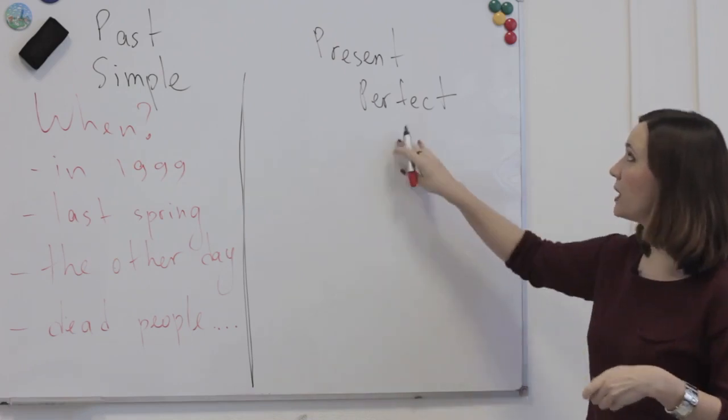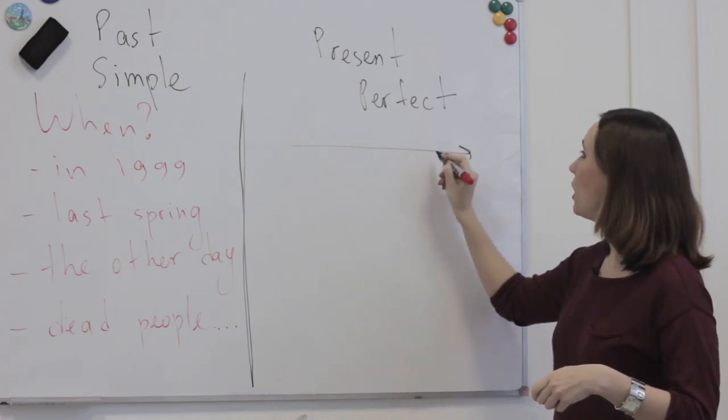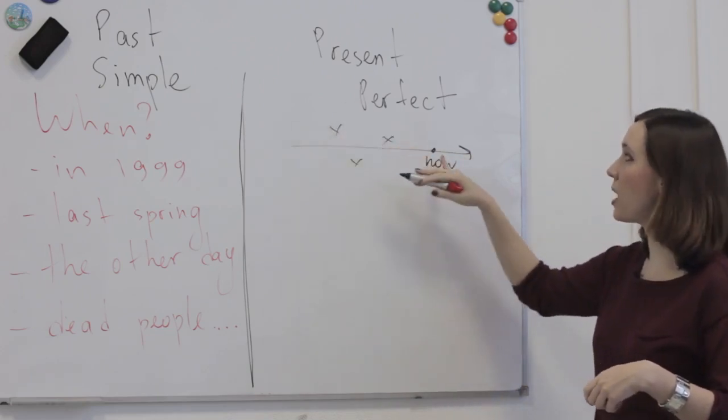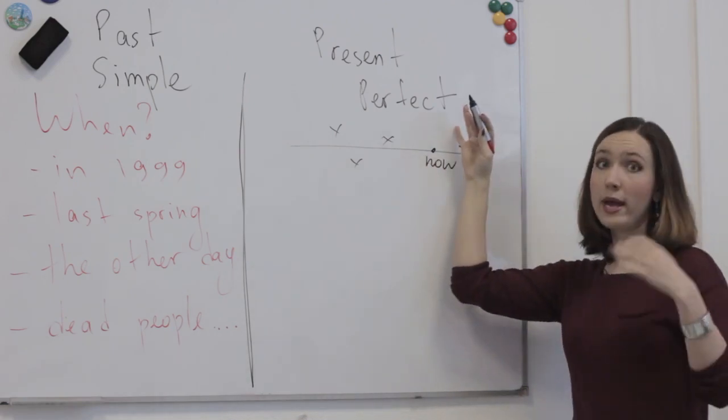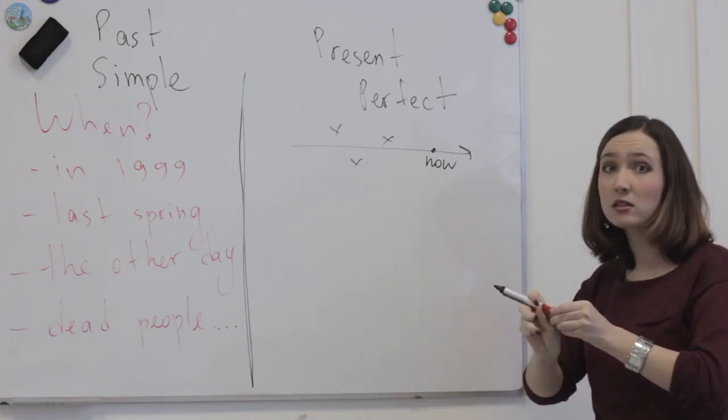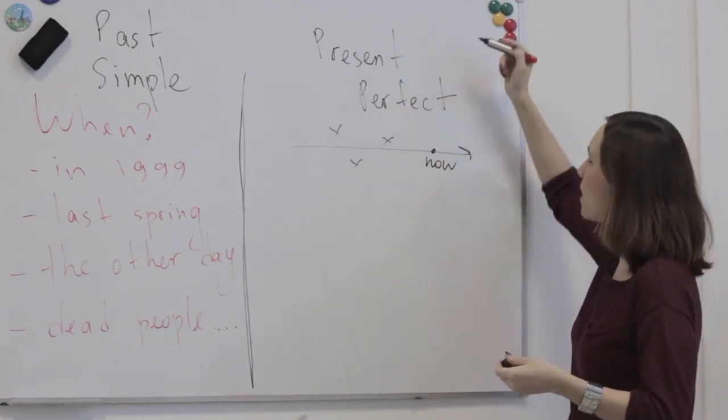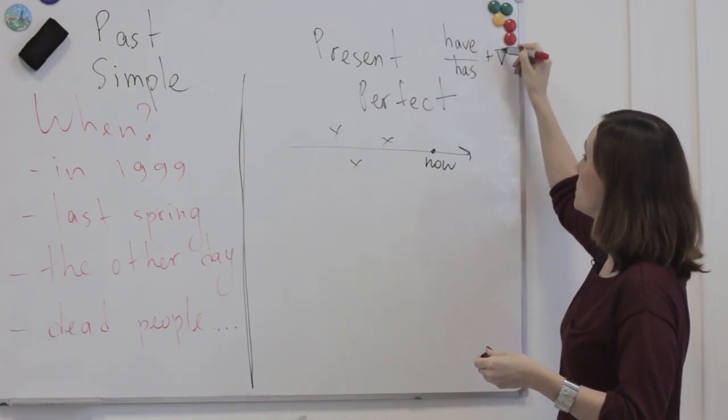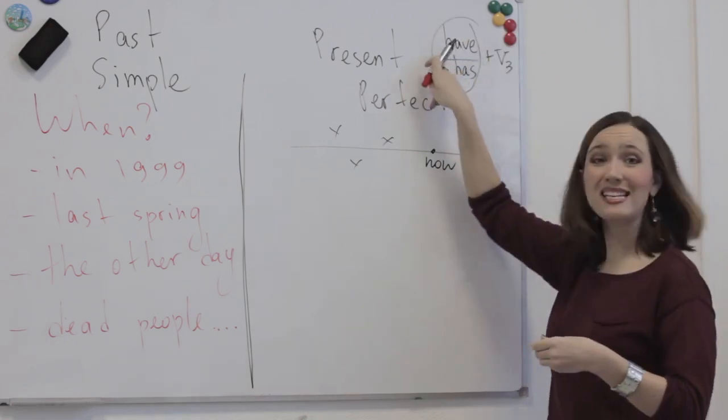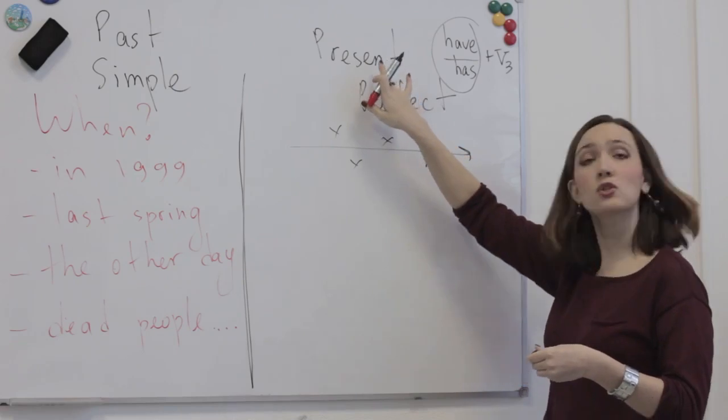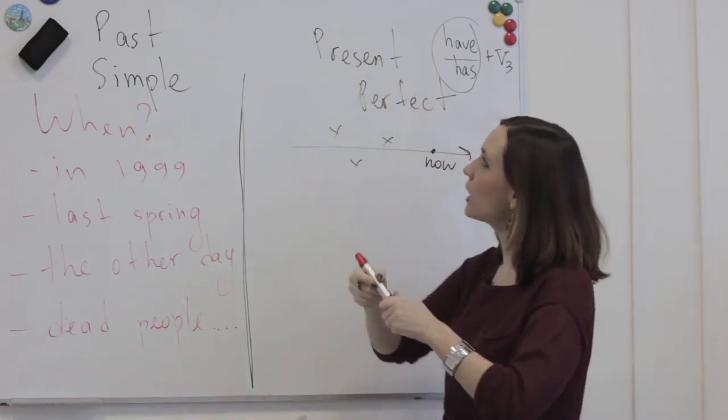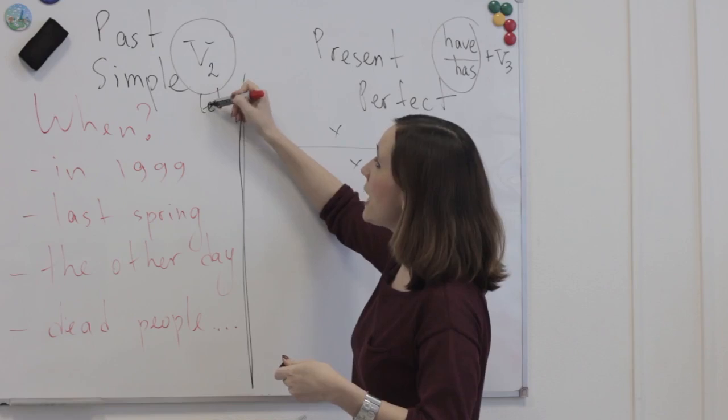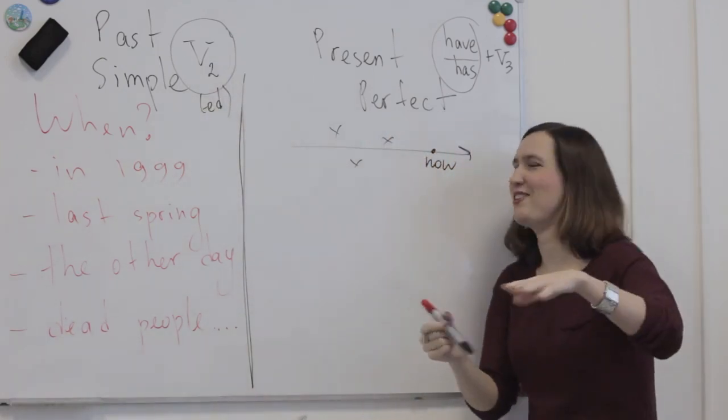And here present perfect, as you guys remember, it can be anything that happened at some point in the past before now. But we have a very important result on the present, yeah? That's why the formula is have or has, plus the third form of the verb, because we possess, we actually have something linked to the present here. Before I forget, the formula here is just the second form of the verb, ed ending for regular verbs, but you guys all know that.